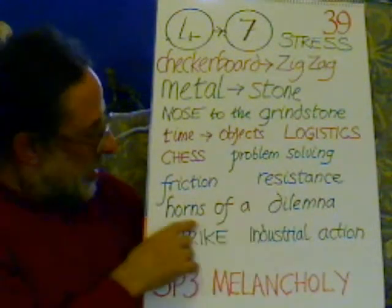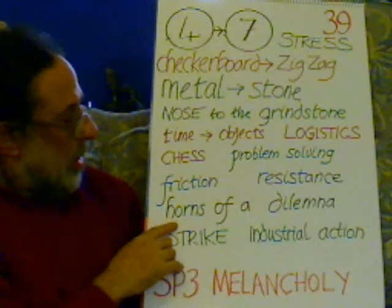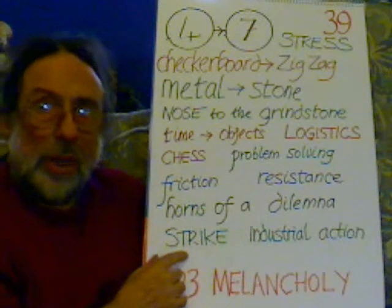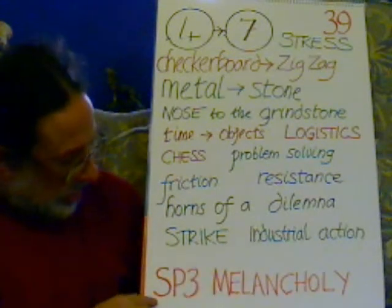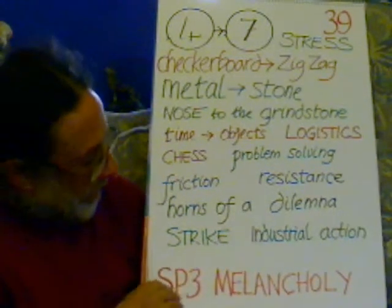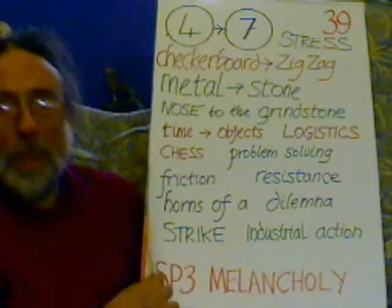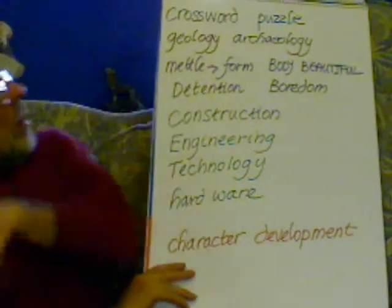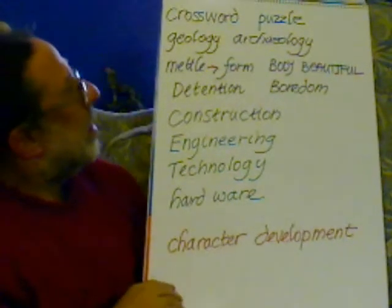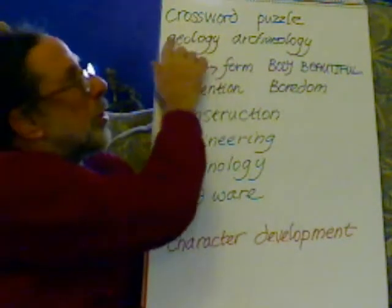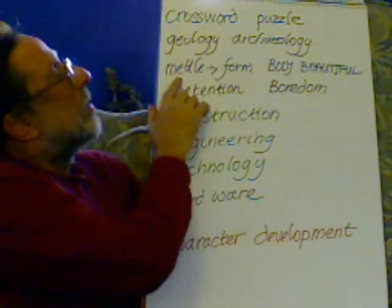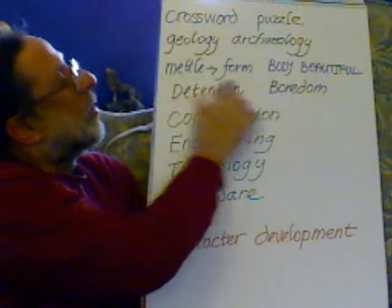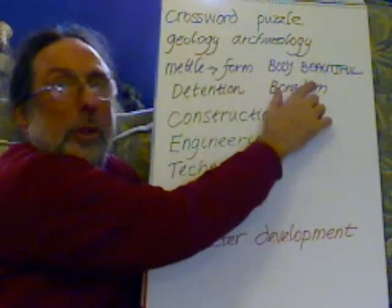Friction, resistance. The horns of a dilemma. A strike, industrial action. Spleen 3, melancholy. Other examples: a crossword puzzle. Geology, archaeology. Metal to form. The body beautiful.